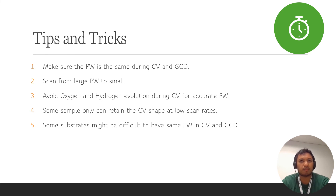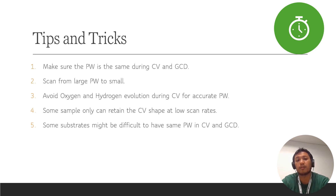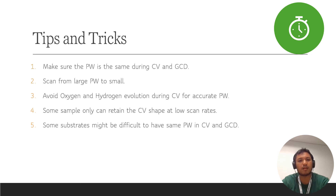Tip 5: Some substrates may make it difficult to have the same potential window in CV and GCD. Different substrates — such as nickel foam, foil, or others — may produce different CV and GCD shapes and may struggle to achieve the same potential window. For example, if your CV window is 0 to 0.5 volts, your GCD might only reach 0.45 volts. Some papers regard this small deviation as acceptable, but you can try increasing the mass loading of the material to reach your desired potential window. Thank you very much.